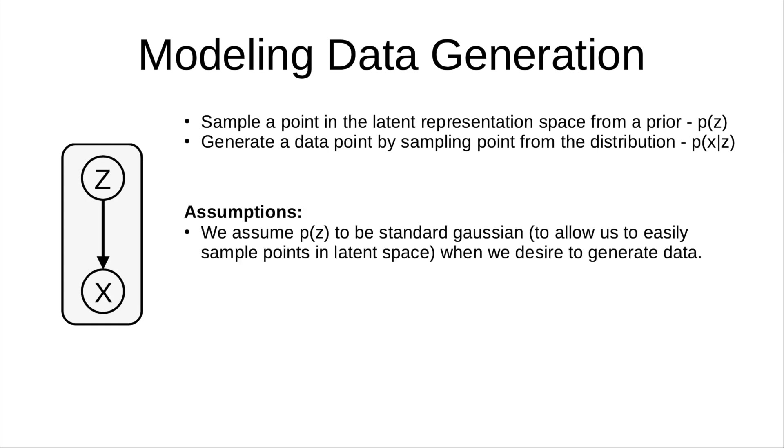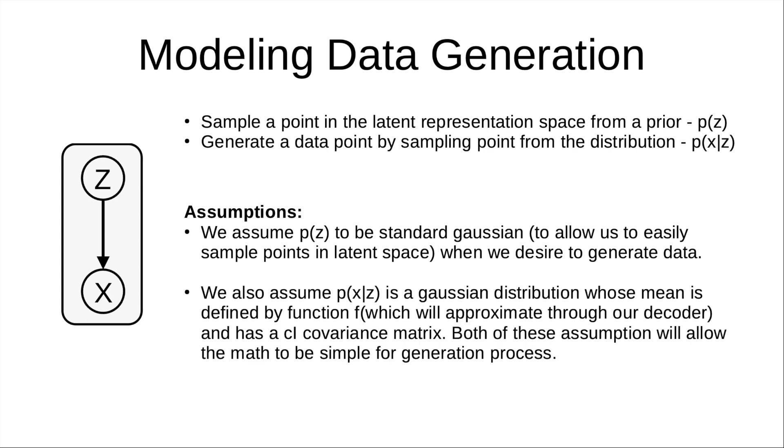We assume p(z) to be a standard Gaussian, which will allow easy sampling. We also assume p(x|z) to be a Gaussian, the mean of which is defined by a function f, which we will approximate through our decoder, and it has a covariance matrix which is just a constant times identity. Both of these assumptions will simplify the generation process.